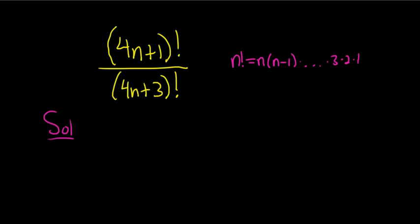So all we'll do here is use that definition. In the numerator, we have 4n plus 1. And then it's always 1 less, so you subtract 1. So here we have n, and this here is like our n. Then we subtract 1, so n minus 1. So 4n plus 1 minus 1 is just 4n. Then you subtract 1 again, so you get 4n minus 1 times dot dot dot times 3, 2, 1.